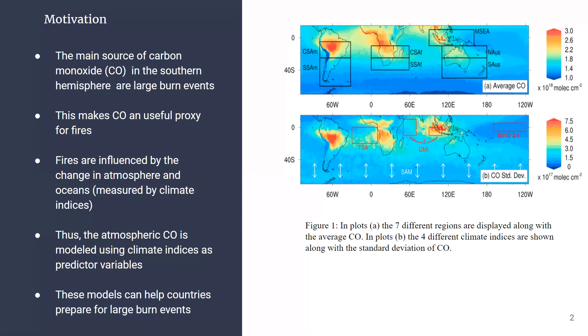In figure one, we can see the seven different regions in the southern hemisphere that we're going to create multiple linear regression models for, along with the average CO. In plot B, we can see the four different climate indices that are shown, along with the standard deviation of carbon monoxide.